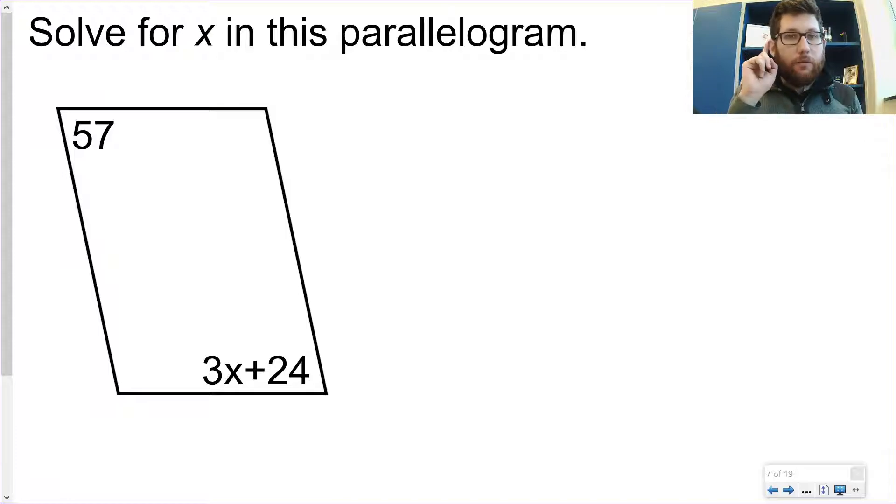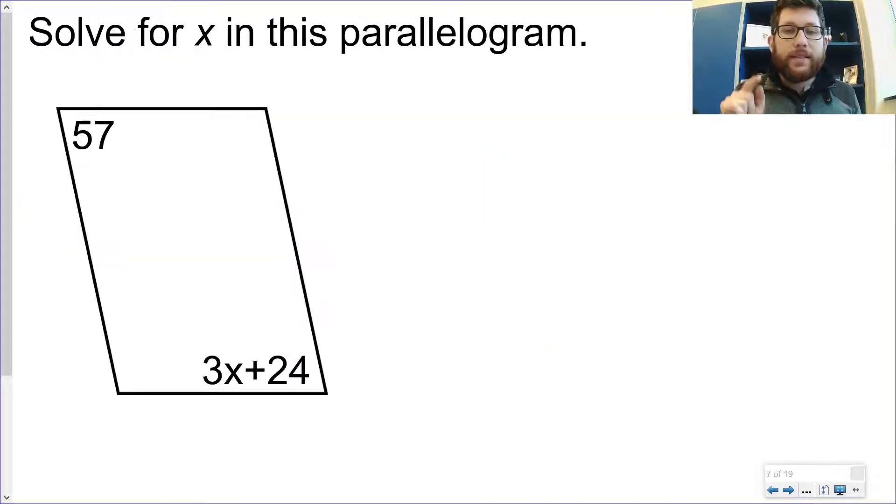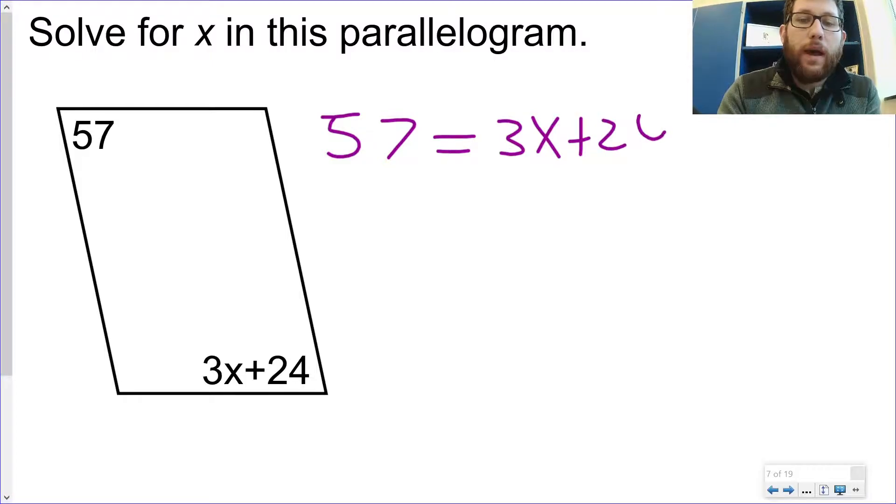The first thing I need to do is say, what do I know about what's being told or what I have here? I've got two angles and they're opposite each other. So what do I know about opposite angles? I know opposite angles are congruent. That's going to tell me how to set this thing up. So I'm going to set it up. 57 is equal, remember, congruent is like equals, so 57 is equal to 3x plus 24.